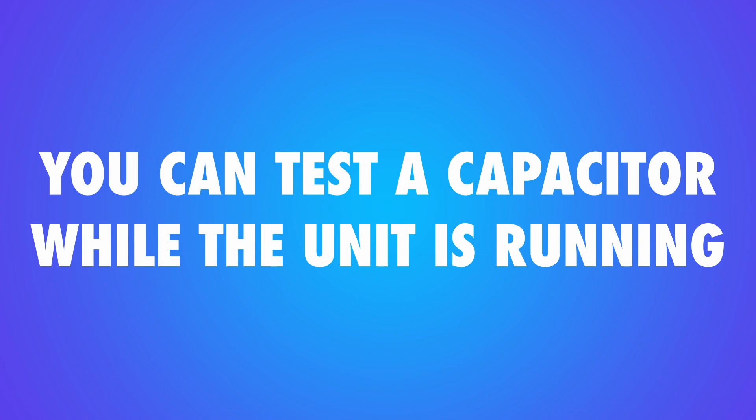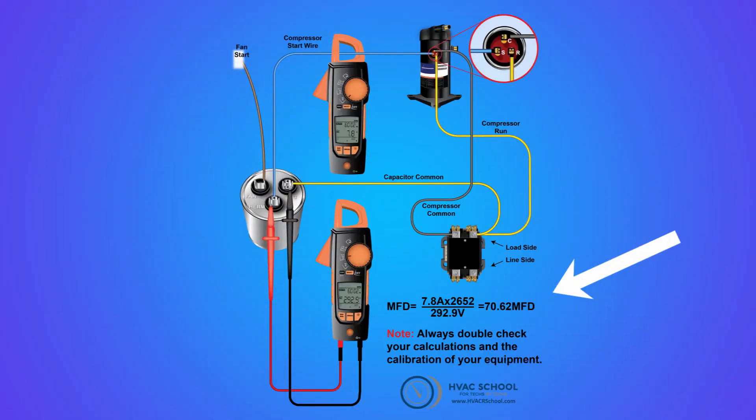You can test a capacitor while the unit is running. You simply measure the current or amperage of the motor start winding coming off of the capacitor and multiply it times 2652 on 60 hertz power and 3183 on 50 hertz power. Then you divide that number by the voltage you measure across the capacitor to come up with your microfarad value.